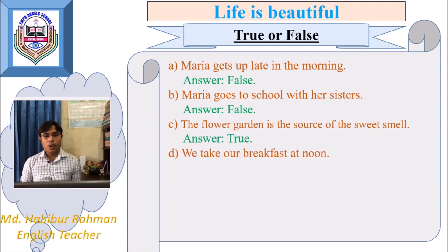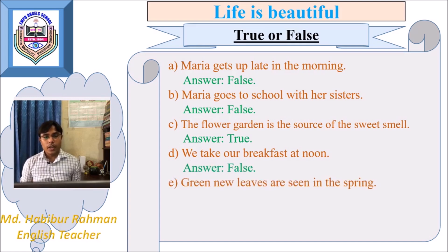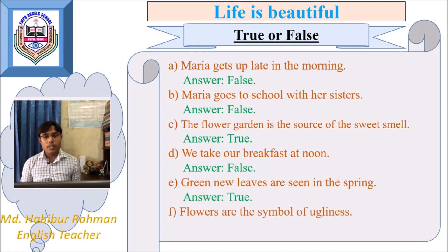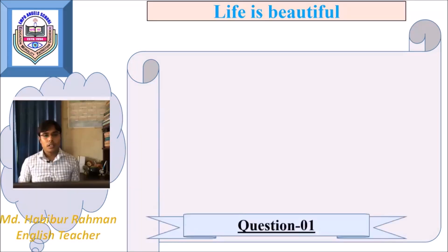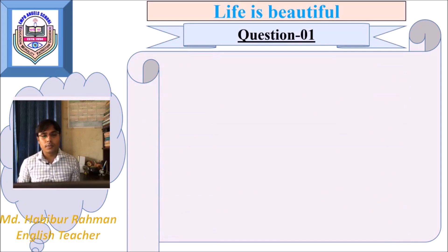Fourth statement: we take our breakfast at noon. No — we take our breakfast in the morning, so this statement is false. Fifth statement: green new leaves are seen in the spring. Yes, green leaves are seen in the spring, so this statement is true. Sixth statement: flowers are the symbol of ugliness. We know flowers are the symbol of innocence and beauty, so this statement is false.